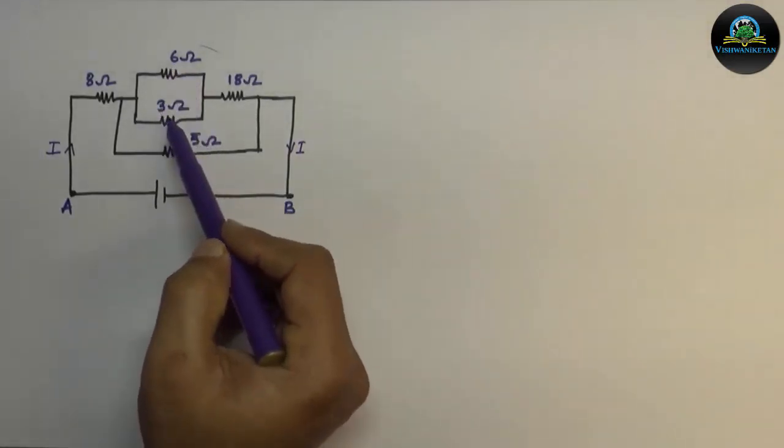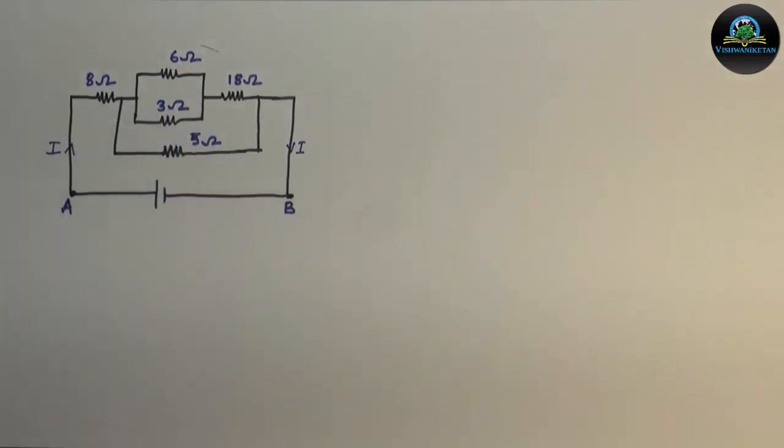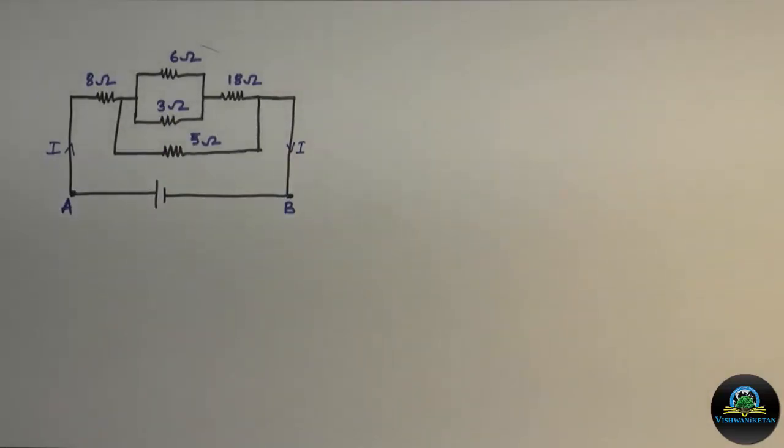So they can be converted into a single resistance. Now we remember that the equivalent resistance of two parallel resistances is given by RT equals R1 times R2 divided by R1 plus R2.